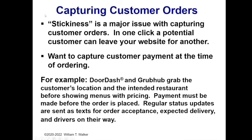Now, capturing the customer order. The issue, as I mentioned before, is stickiness — how do you make the customer stay on your website, make the decision to buy your product, and pay before they leave. You want to get as much information as you can right away. DoorDash and Grubhub both capture your location and the restaurant you intend to do business with before they ever show you menus or pricing. The payment has to be made before the order is placed. The nice thing is you then get regular status updates: a text message that your order has been accepted, an expected delivery time, and a text message when the driver is actually on the way.